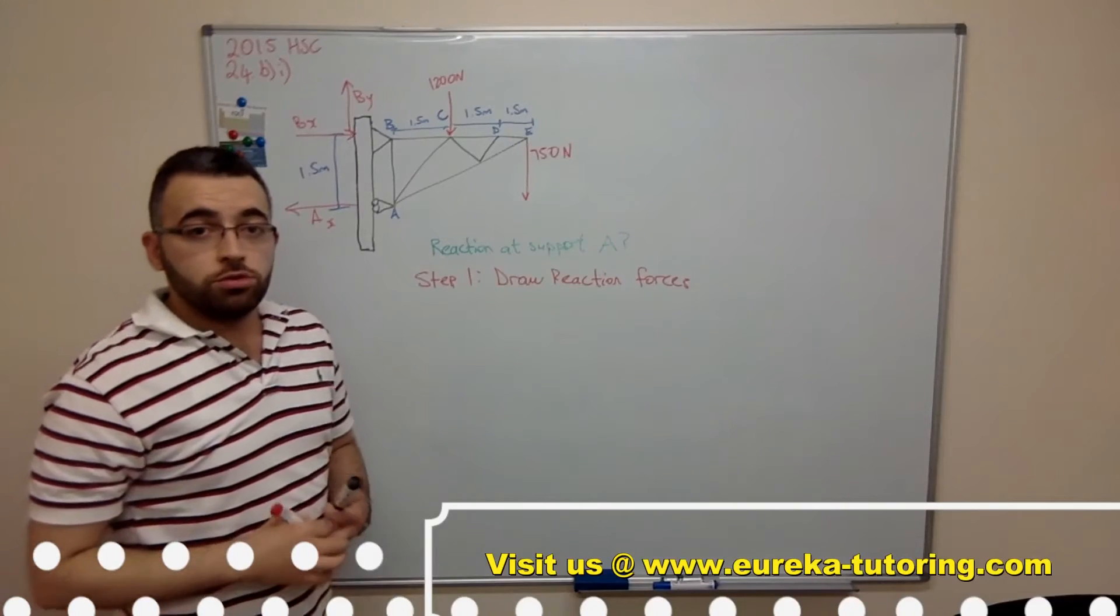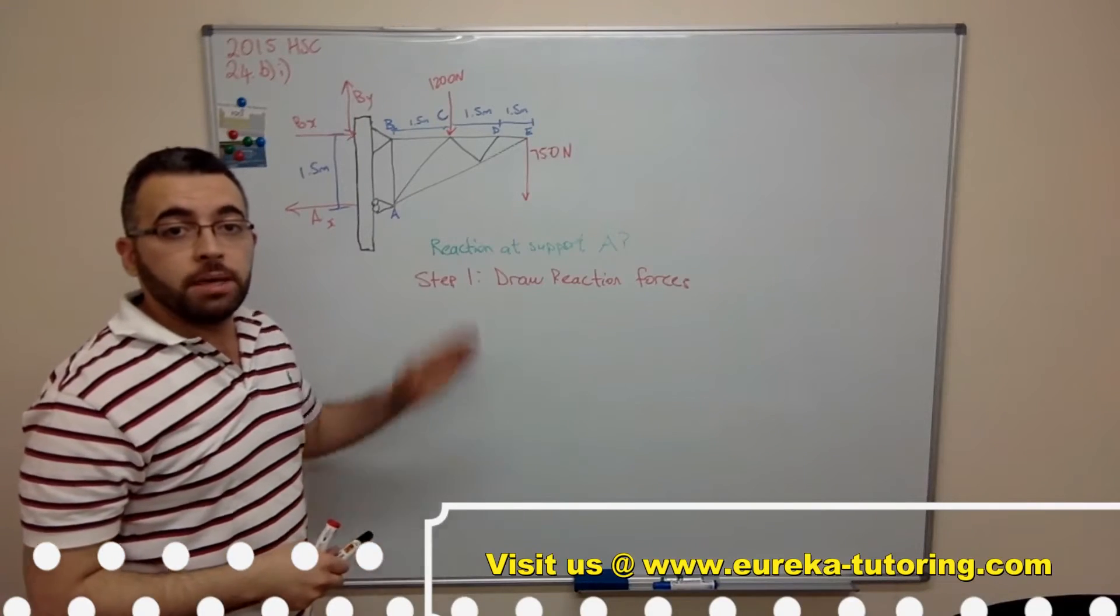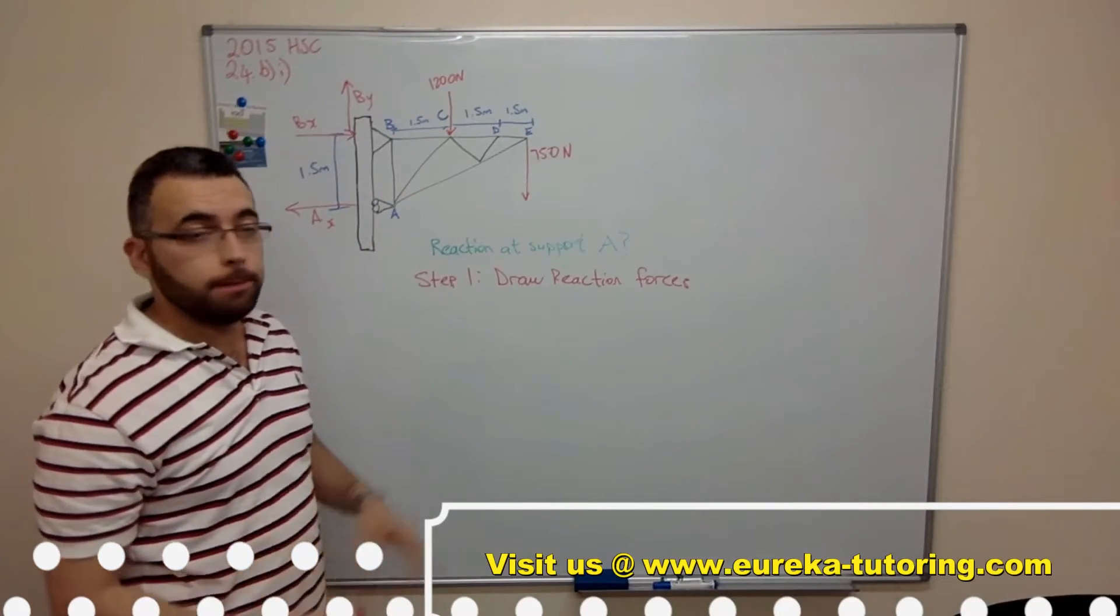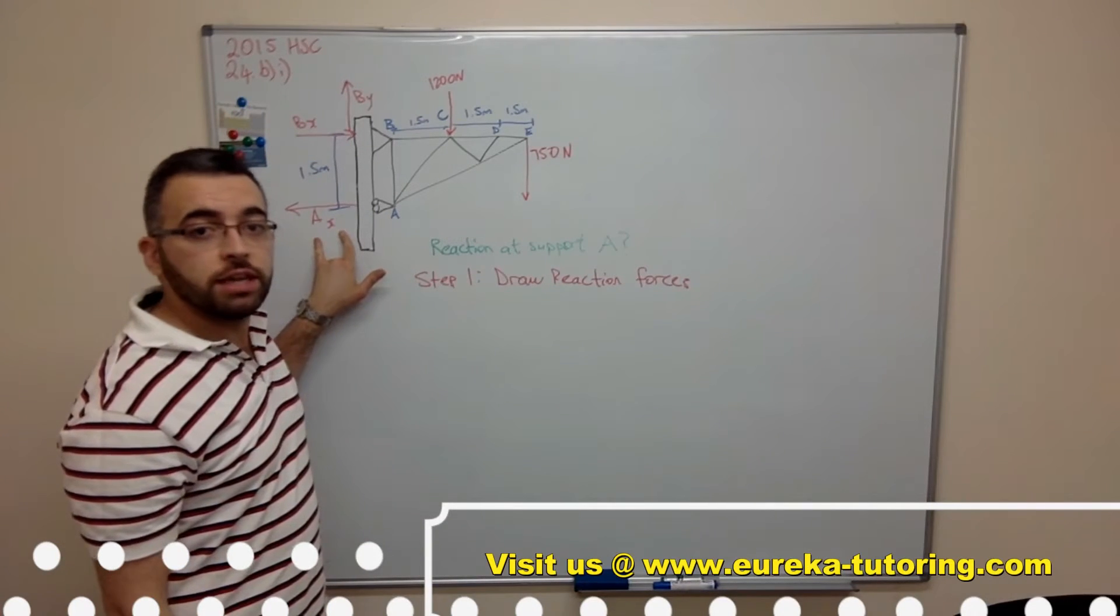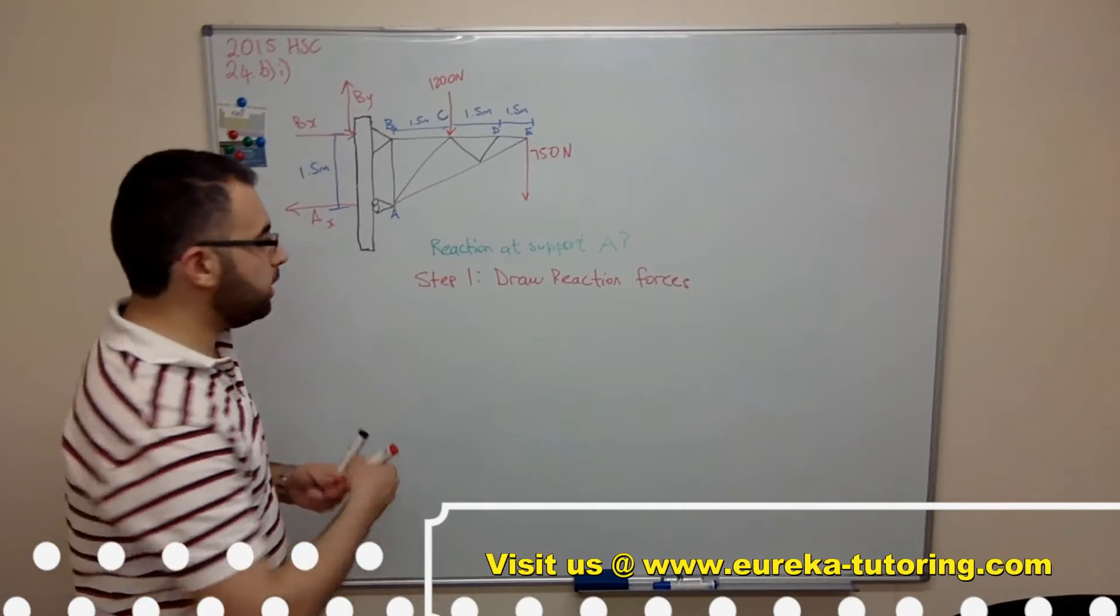Now the next step is to do sum of moments about pin joint B. By doing sum of moments about B it gets rid of these two forces leaving the one unknown which is what we are interested in, and that is Ax.